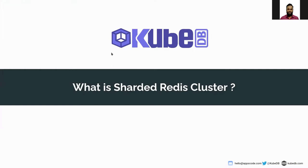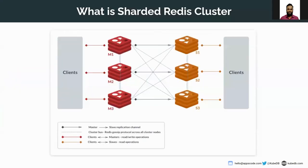Redis supports data structures such as strings, sorted sets, and streams. Redis has different modes: standalone, cluster, and sentinel. In cluster mode, we have the concept of shards, so your data will be divided into different shards. Let's have a look at a simple Redis cluster configuration — here you can see we have three masters and three replicas.